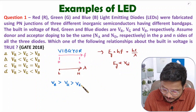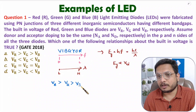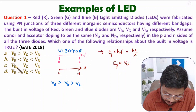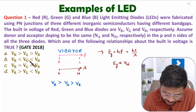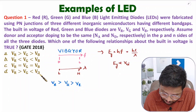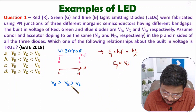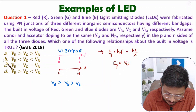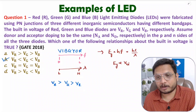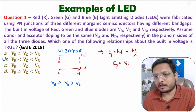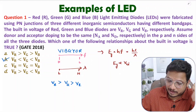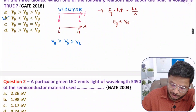So we can observe that Vr < Vg < Vb. Therefore option B is correct. That is how you can understand the first question. Now let me explain the second question, which is also quite interesting.